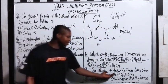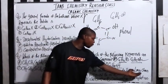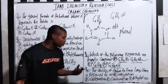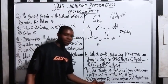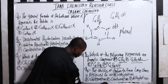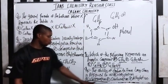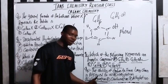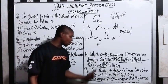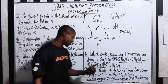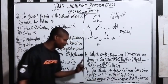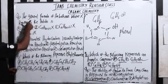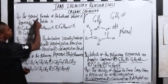Question four: the ability of carbon to form long chains is referred to as what? The answer is catenation. When you see that in exams, don't waste time — the ability of carbon to form long chains is called catenation.